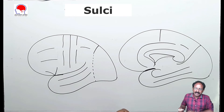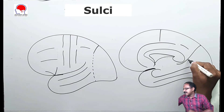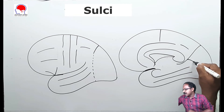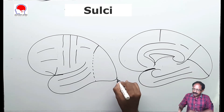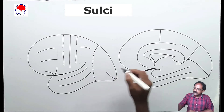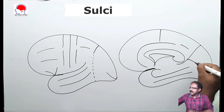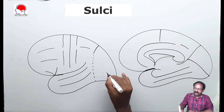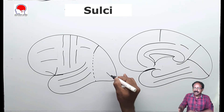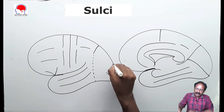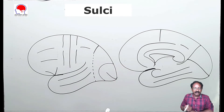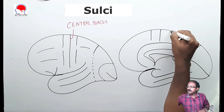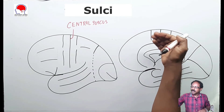Coming to the occipital lobe — on the medial aspect there is a deep sulcus beginning from the parieto-occipital sulcus, running towards the occipital lobe, and curving to the superlateral surface; this is named as the calcarine sulcus. This calcarine sulcus extends to the superlateral surface where it is named as the post-calcarine sulcus. There is another sulcus around the post-calcarine sulcus named as the lunate sulcus. The precentral sulcus and postcentral sulcus are also extending to the medial surface.